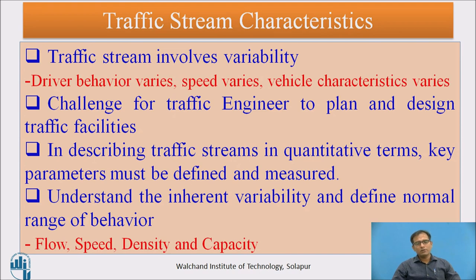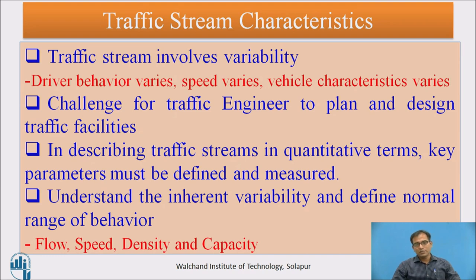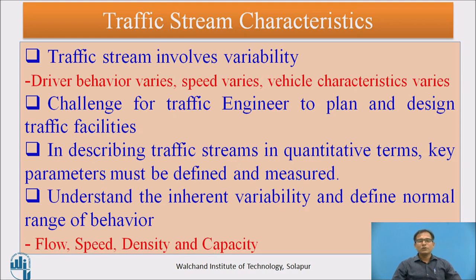The traffic stream involves the driver, vehicle, and physical road features and its environment. Traffic streams involve variability because driver behavior varies, speed varies, and vehicle characteristics vary. Driver behavior depends on location and time — some drivers go at very high speed, some at very low speed. Vehicle characteristics such as length, weight, and height all vary. This makes it a tough challenge for a traffic engineer to consider all these varying factors and design the facilities.